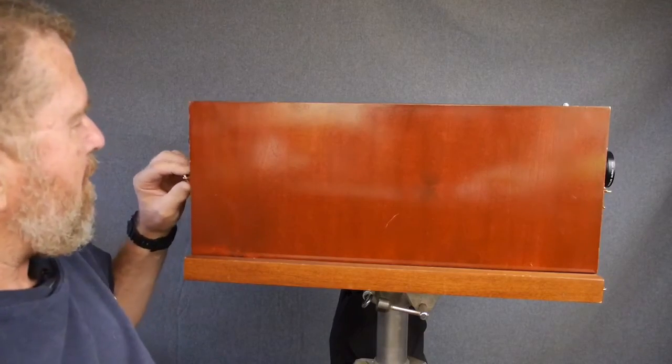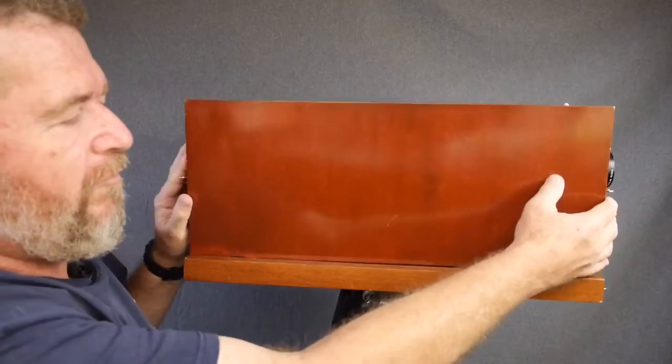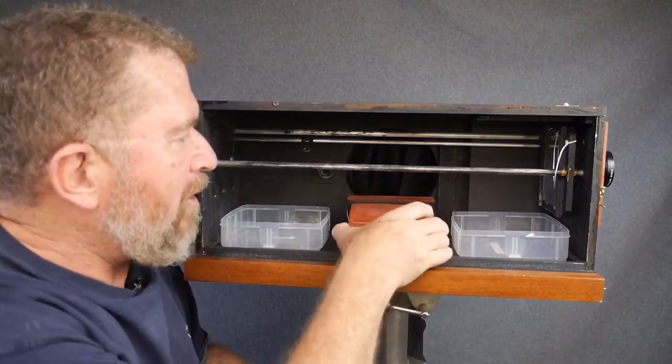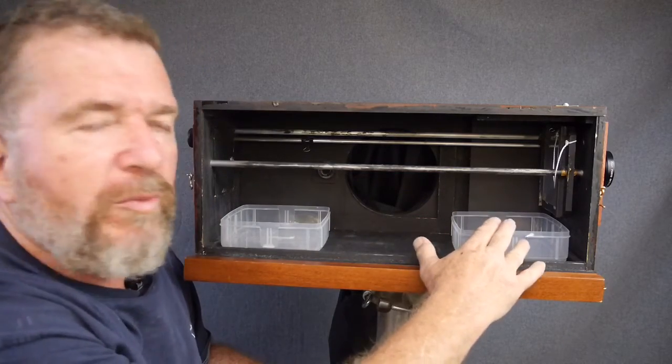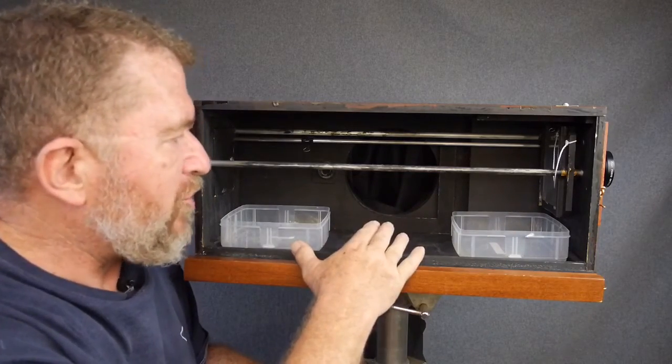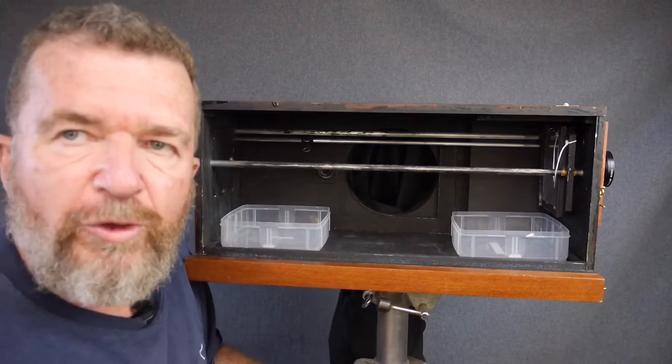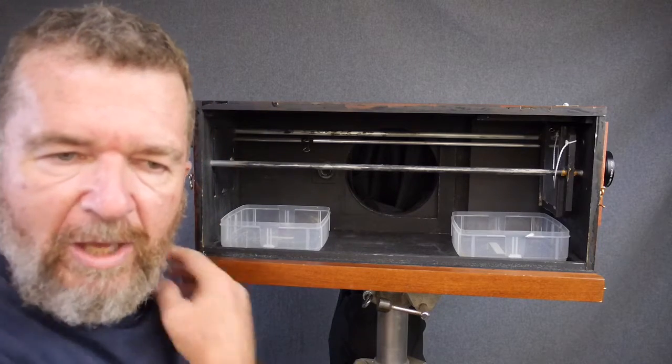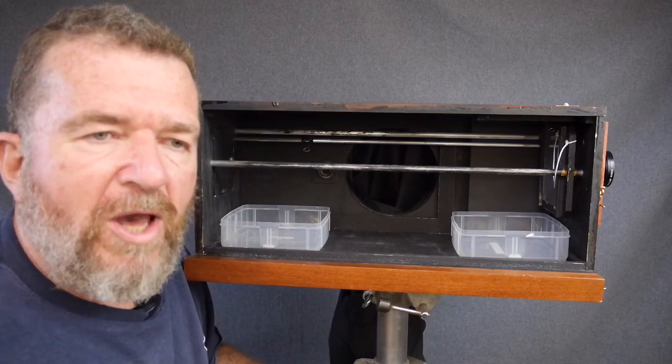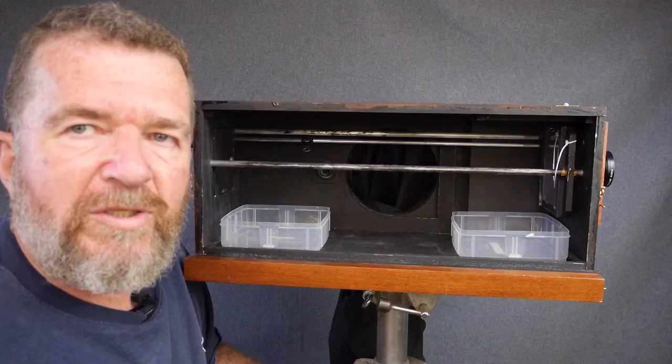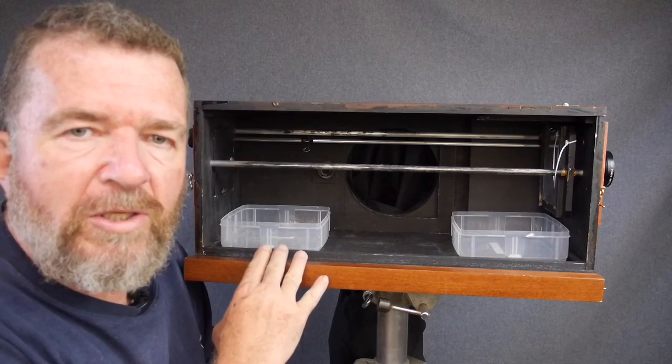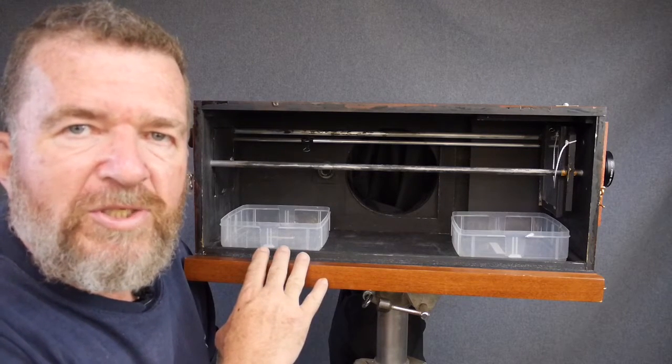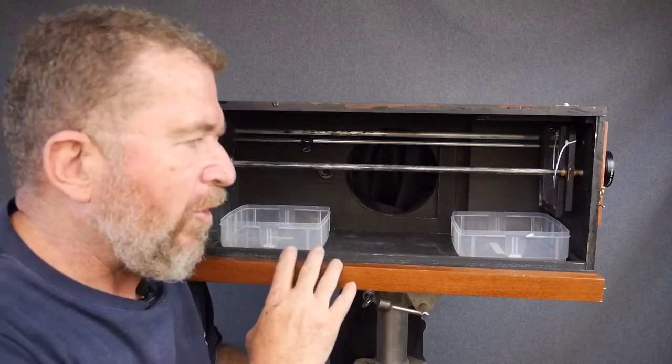Let me take the side panel off of the camera just to show you the insides here. So what we had before was we had developer tray, a stop-bath tray, and a fixer tray, the traditional three basic chemicals for black and white processing. One of the things I was thinking about was eliminating the stop-bath tray completely, because the fixer is slightly acidic anyways.